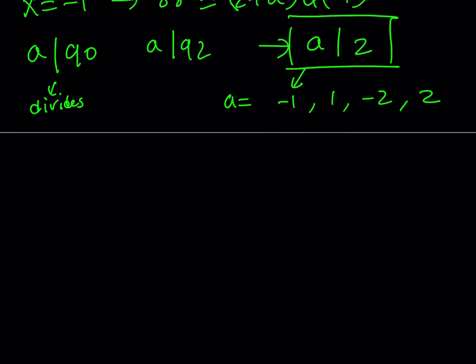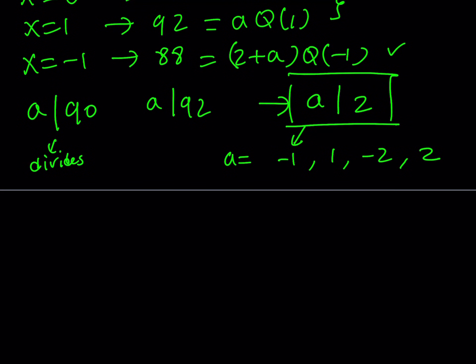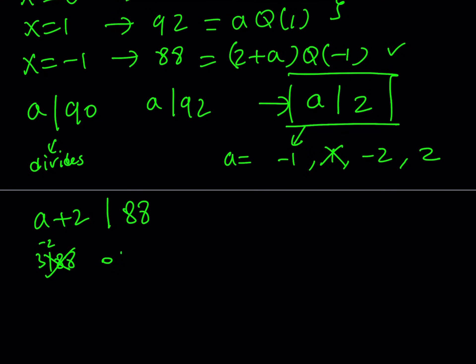The third equation gives us additional criteria: a plus 2 divides 88. Looking at our candidate values — if a equals negative 1 we're good. If a equals 1 we get 3 divides 88, which is false, so 1 is not valid. If a equals negative 2 we get 0 divides 88, which is also not valid. If a equals 2 we get 4 divides 88, which works. So we have two possible values: a equals negative 1 or positive 2. Let's test each one.